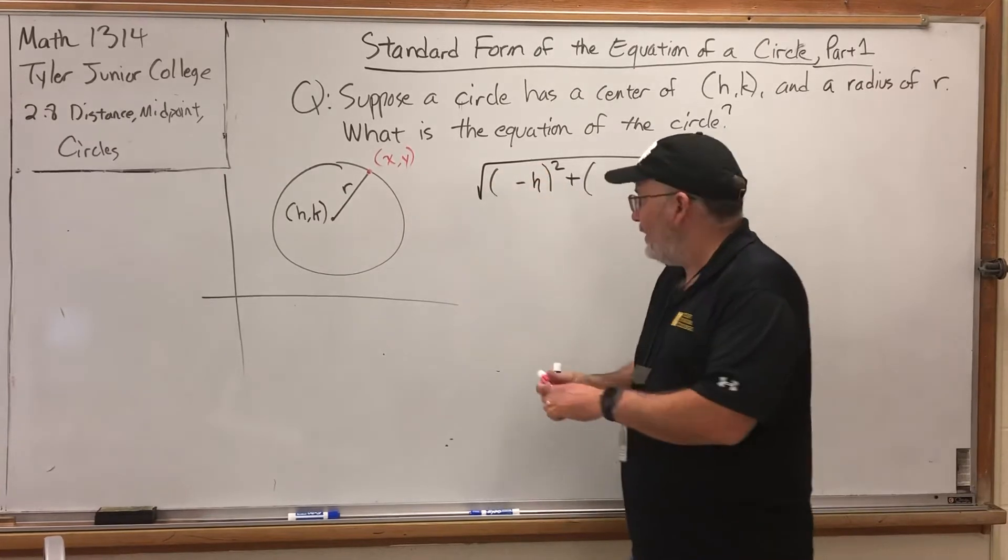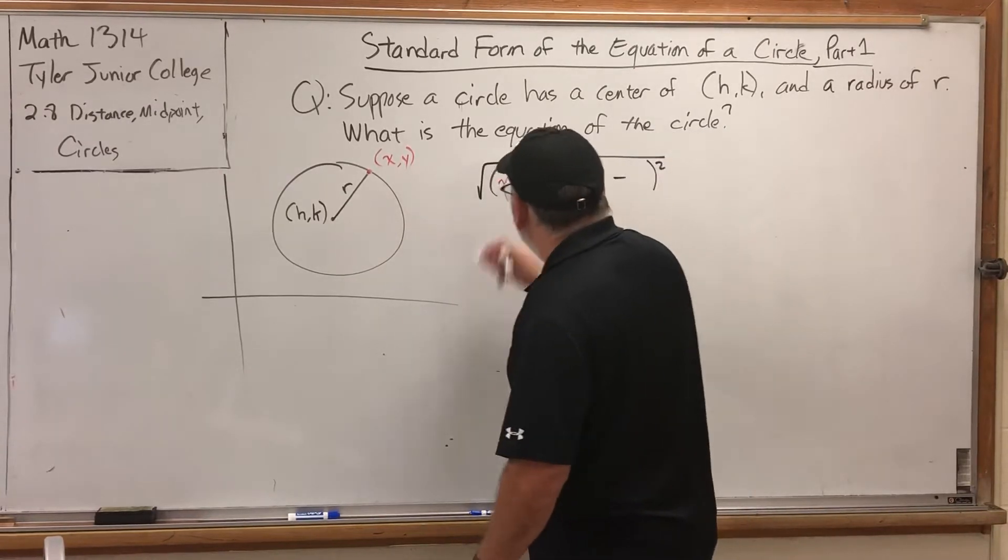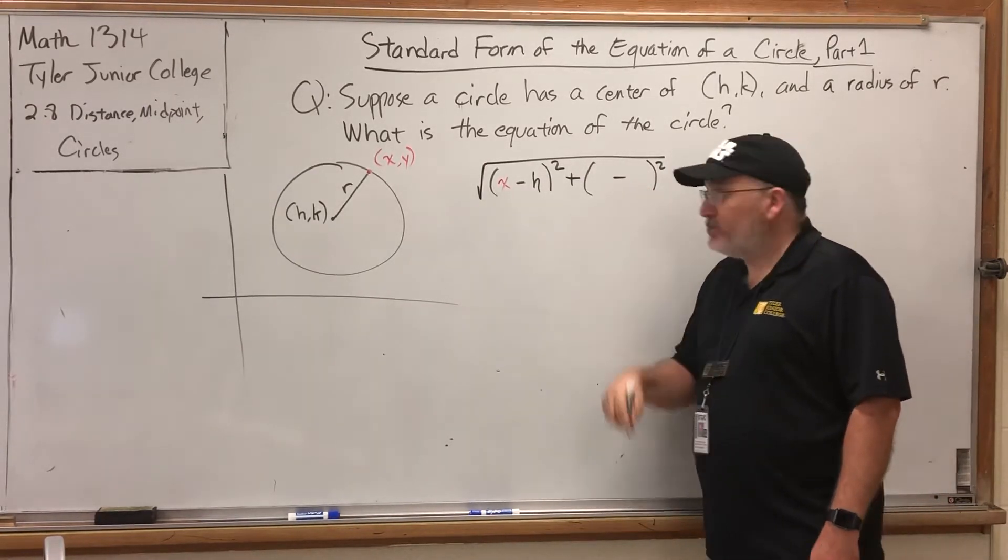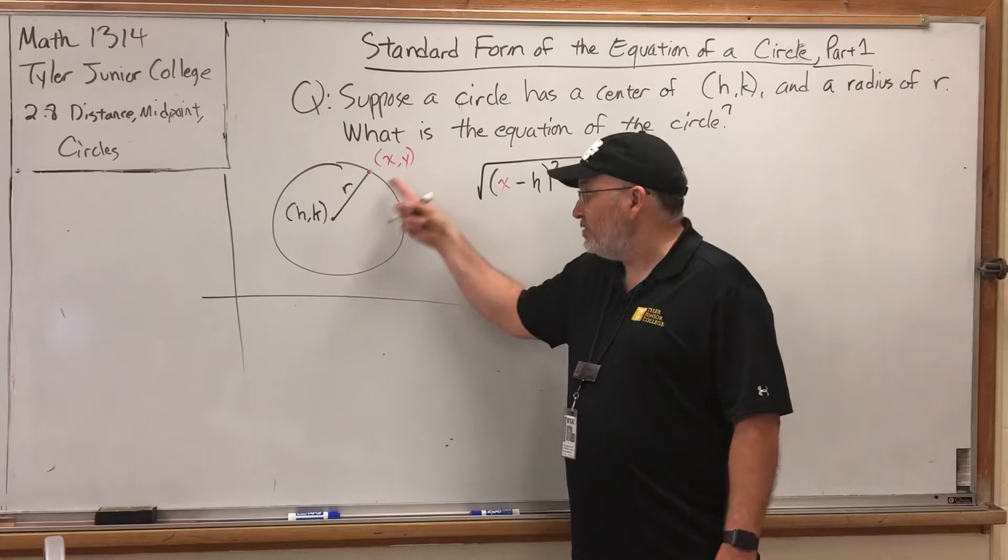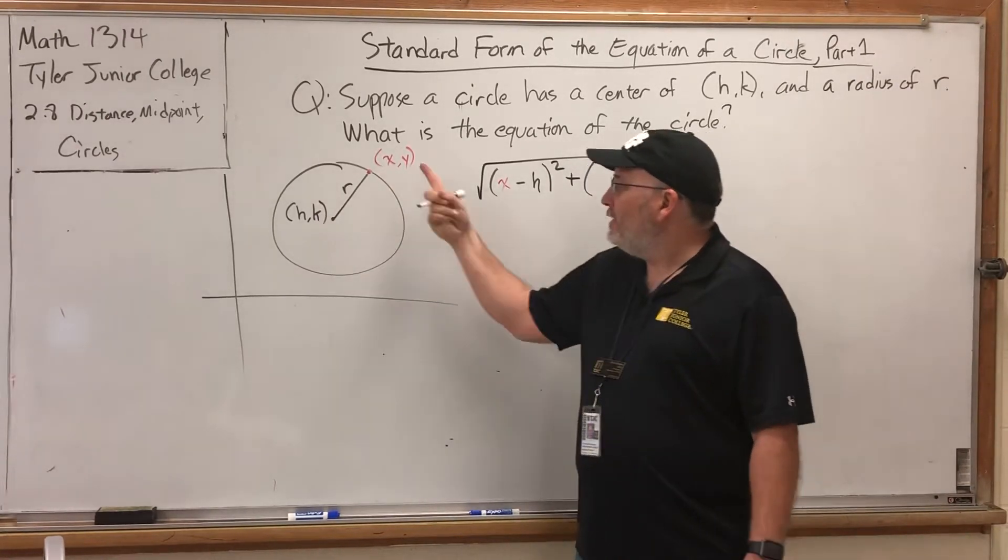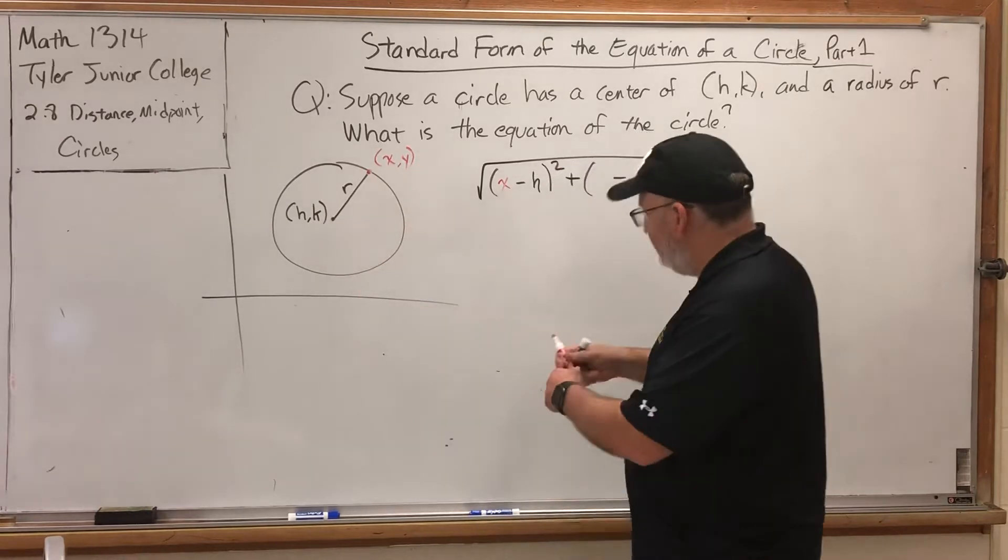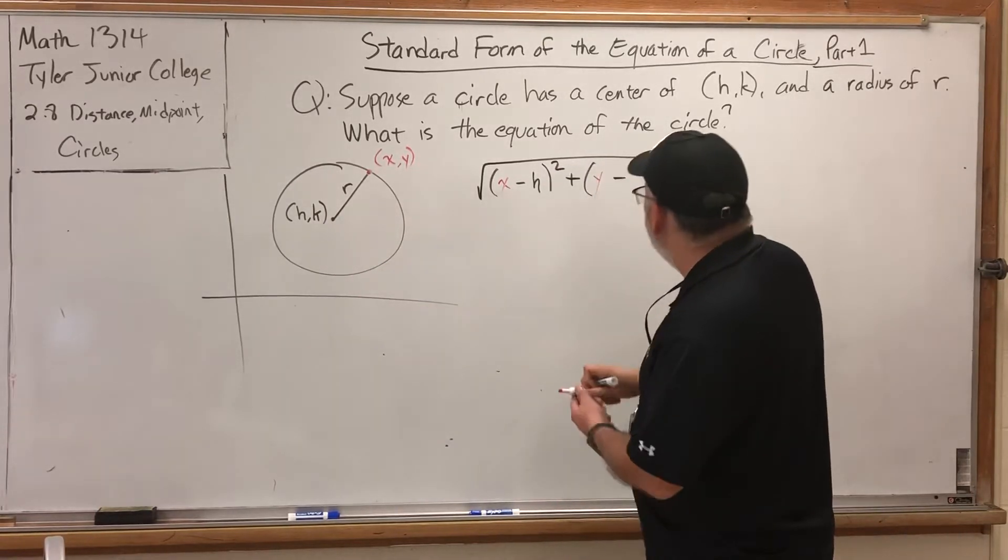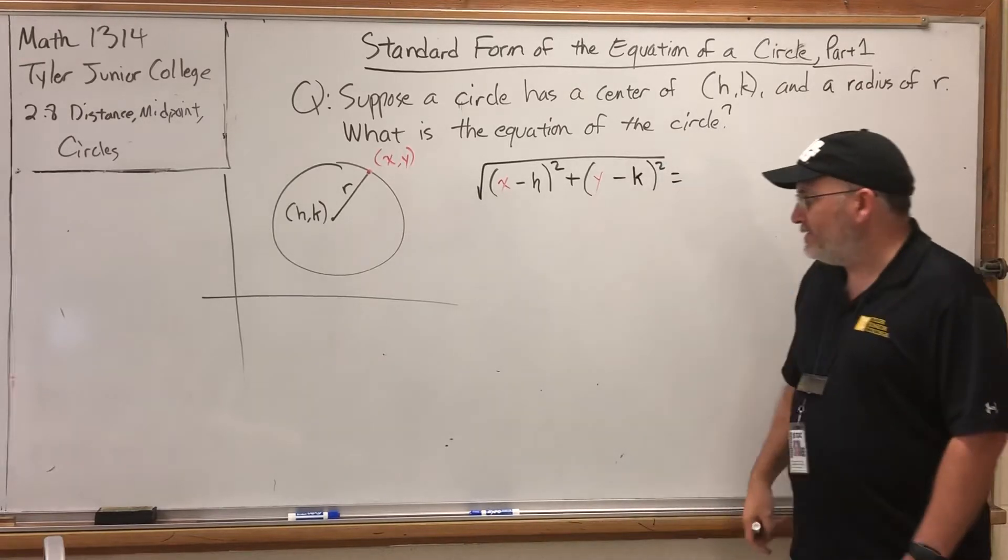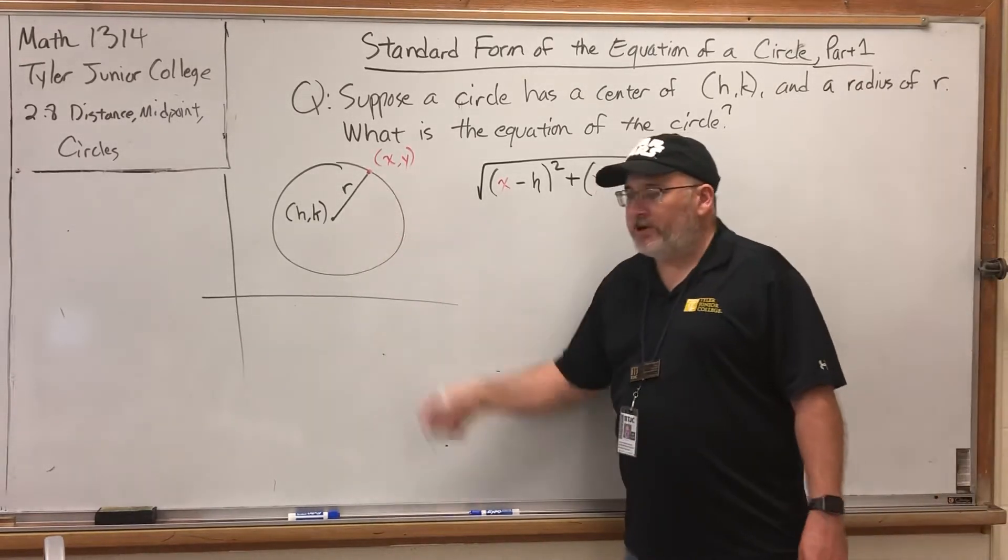Let's put a red x here. And then the other subtraction problem is the difference in the y-coordinates. Using the same first and second points, the second y minus the first y is y minus k.